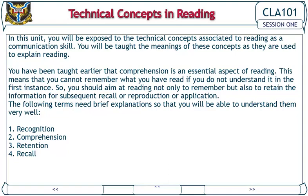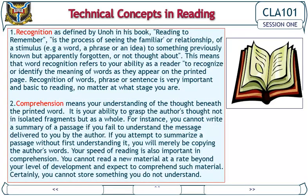The following terms need brief explanations: 1) Recognition, 2) Comprehension, 3) Retention, 4) Recall. Recognition, as defined by Uno in his book Reading to Remember, is the process of seeing the familiar relationship of a stimulus — for example, a word, a phrase, or an idea — to something previously known but apparently forgotten or not thought about. This means that word recognition refers to your ability, as a reader, to recognize or identify the meaning of words as they appear on the printed page. Recognition of words, phrases, or sentences is very important and basic to reading.